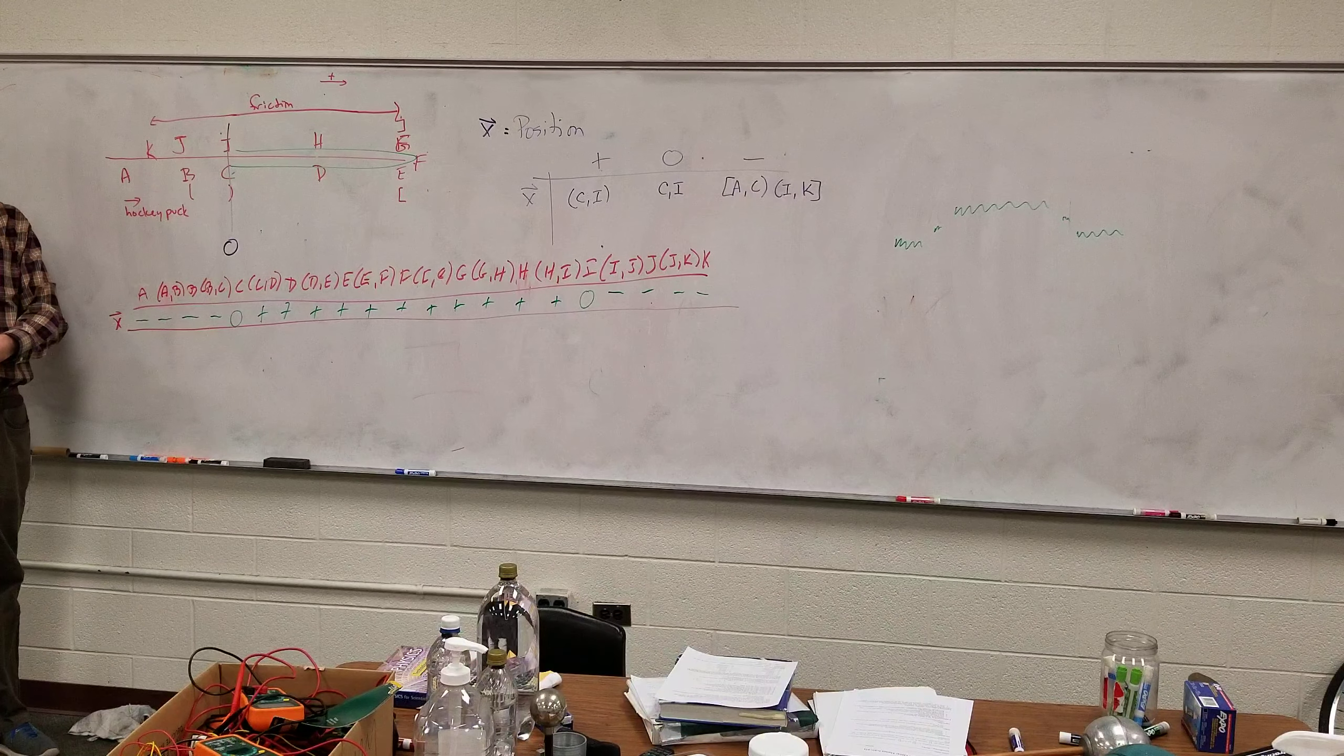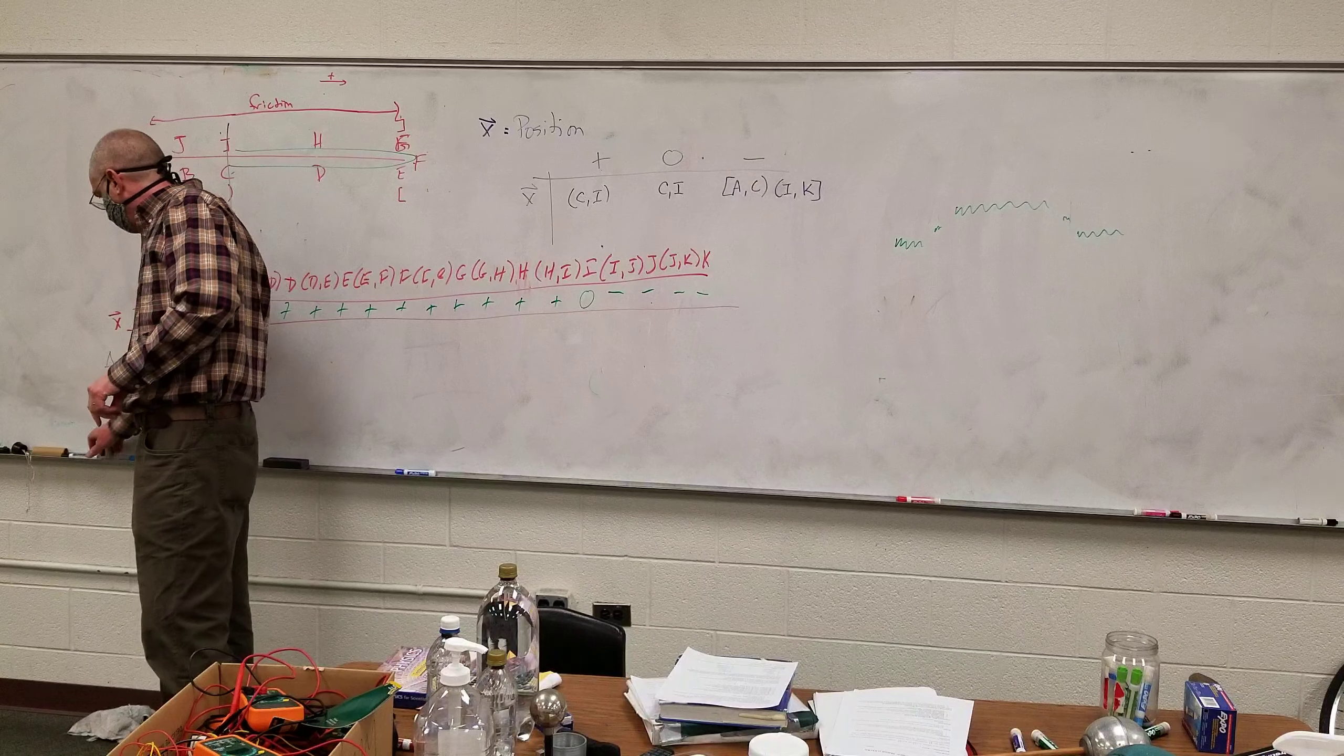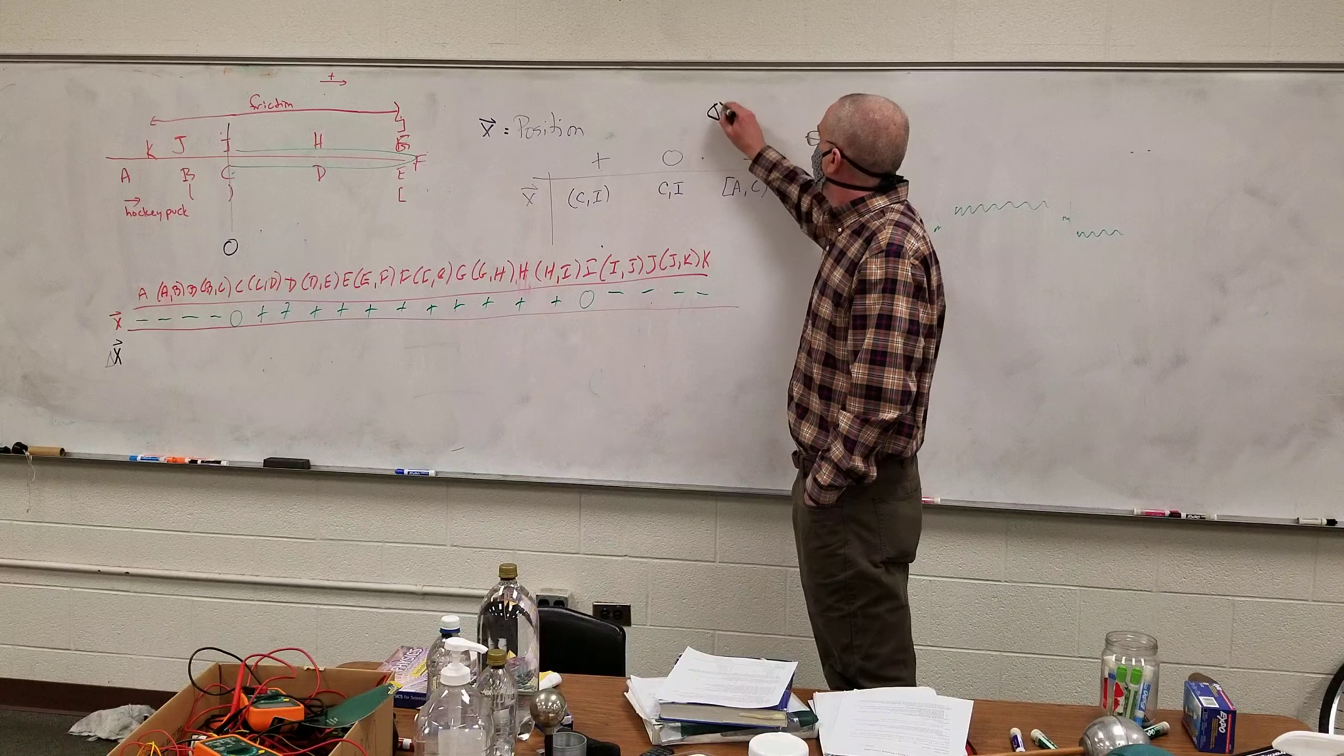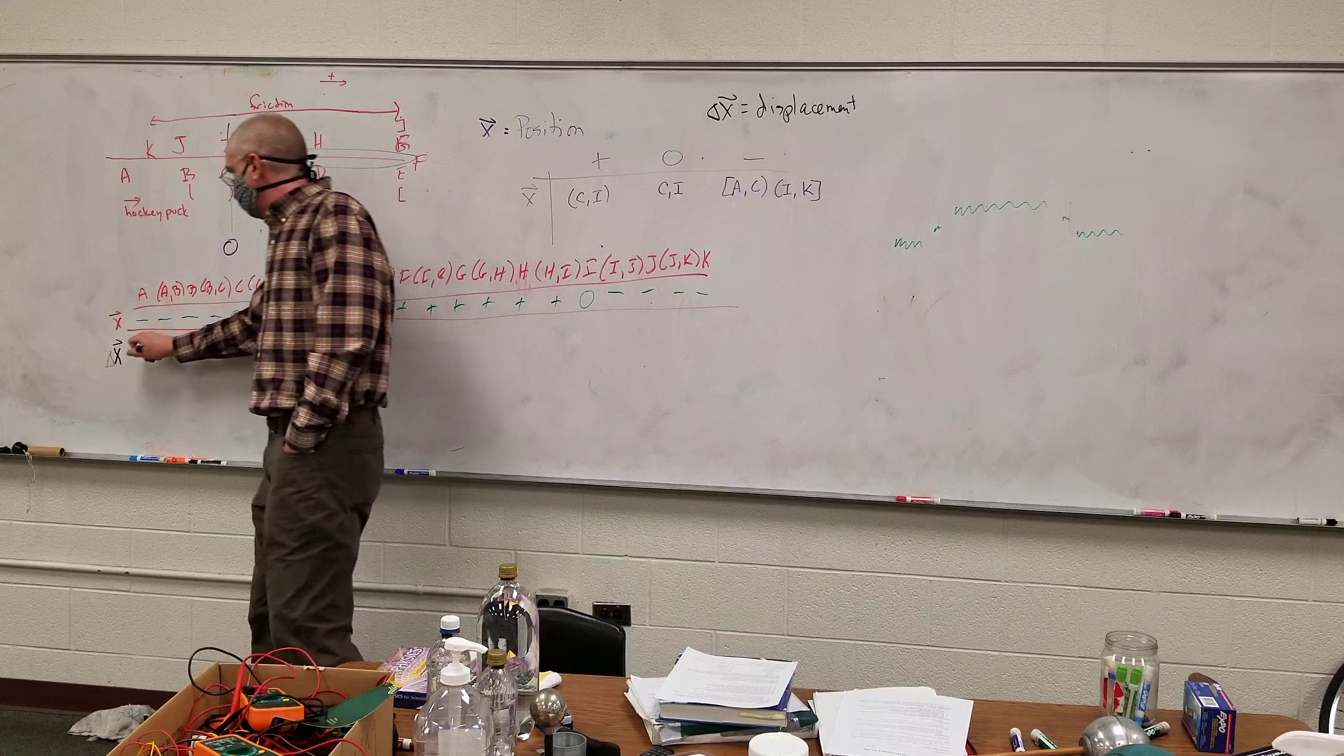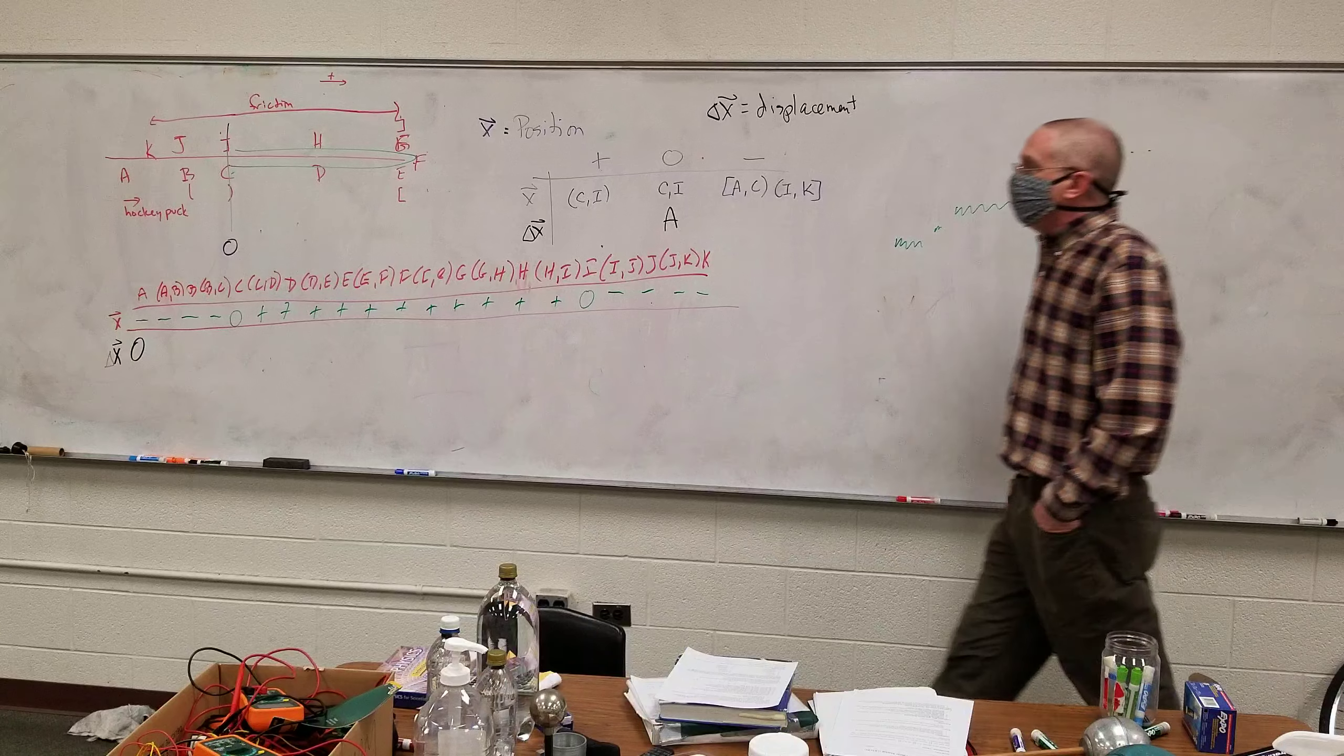All right, each of these are moments in time, and so the clock is moving down here and back. That's right. So once it passes time C, it stays on the positive side until it gets back to here. So that's just one continuous thing. Yes. So when I write C comma I like that, I'm talking about from here all of this. Okay. So you can't do that for negative. No, because there's a break. Because it starts negative and then it jumps into positive and then jumps back to negative.